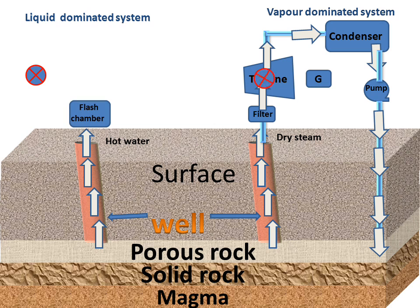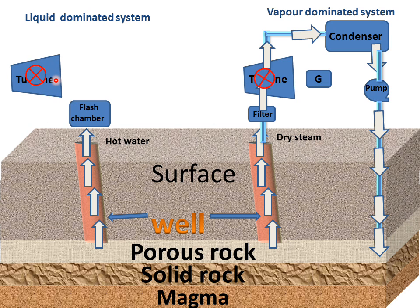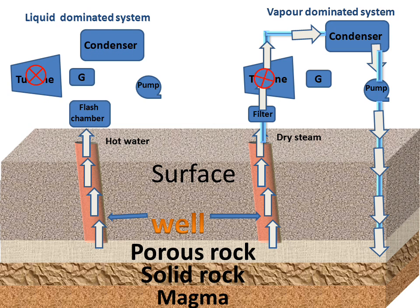In the liquid-dominated system, there will be a flash chamber for separating hot water and steam. Impurities in the mixture of water and steam are also separated in the flash chamber. Then we have a turbine for rotating, which is connected to the generator. After the steam leaves the turbine, it goes to the condenser for changing phase, and then we have a pump.